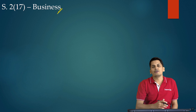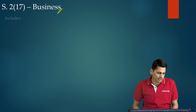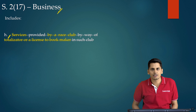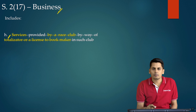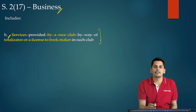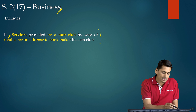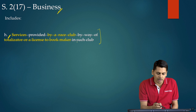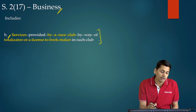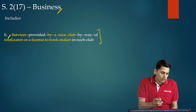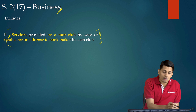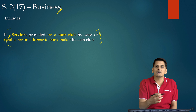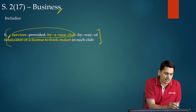Next, Section 2(17) — the definition of 'business.' Among its clauses, clause (h), prior to amendment, read: 'services provided by a race club by way of totalisator or license to a bookmaker in such club.' This was included in the definition of business, but there was a problem with the wordings.